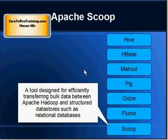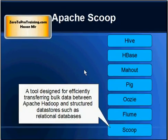Then we have Apache Sqoop. This is a tool to transfer bulk data between Hadoop and relational databases. This gives you a very brief introduction to each of these popular tools. In coming videos, we will go into details.